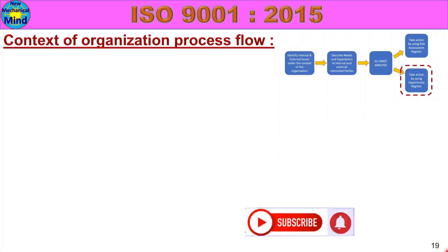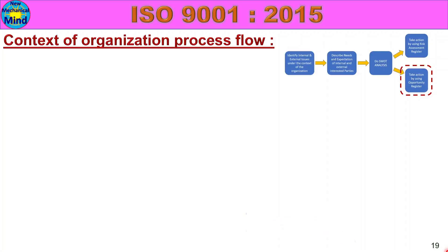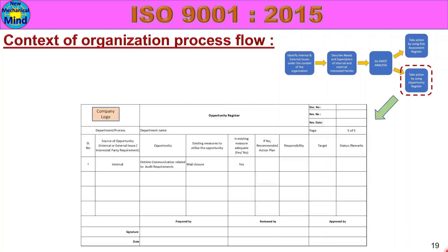Take action by using the opportunity register. We will use threat points and action in the risk assessment register. We will use opportunity points in the opportunity register. If we have existing actions, we will implement action. This is the opportunity register.